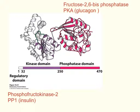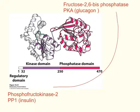Moving from fructose 6-phosphate onward is another point of control. There is a bifunctional enzyme with two domains: a kinase domain and a phosphatase domain. When the kinase domain is active, this enzyme is phosphofructokinase 2; when the phosphatase domain is active, it is fructose 2,6-bisphosphatase. Don't confuse this with fructose 1,6-bisphosphatase or with phosphofructokinase 1. This one enzyme has two different functions depending on whether or not it is phosphorylated.